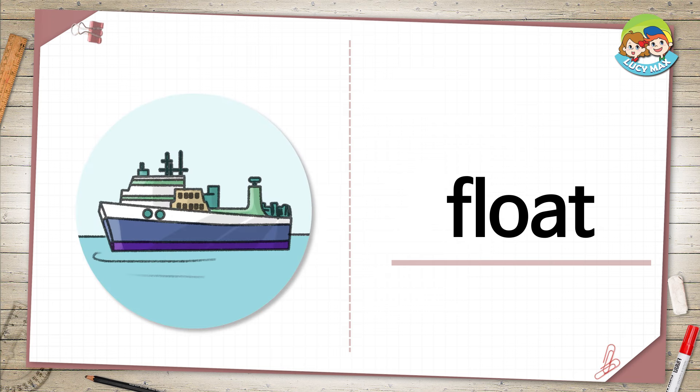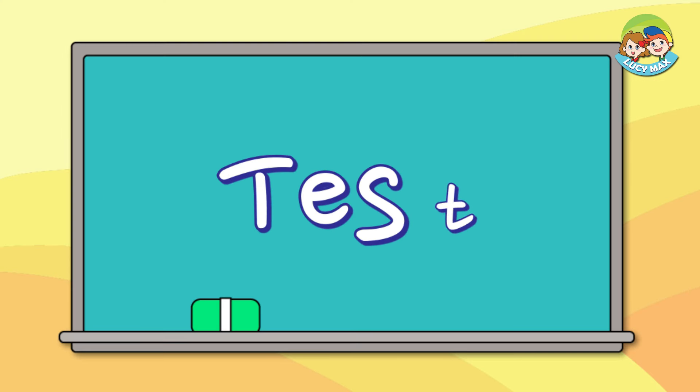Float. The ship is in water. It doesn't go under the water. We say the ship floats. If you put a tube in water, it doesn't go under. It stays on the water. We say the tube floats on water.